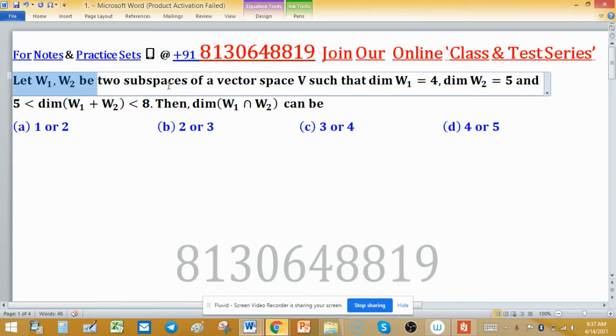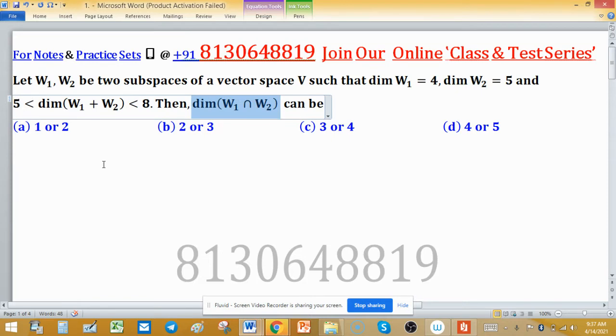Let W₁, W₂ be two subspaces of vector space V such that dimension of W₁ is 4, dimension of W₂ is 5, and dimension of W₁ plus W₂ lies between 5 and 8. Then dimension of intersection can be.